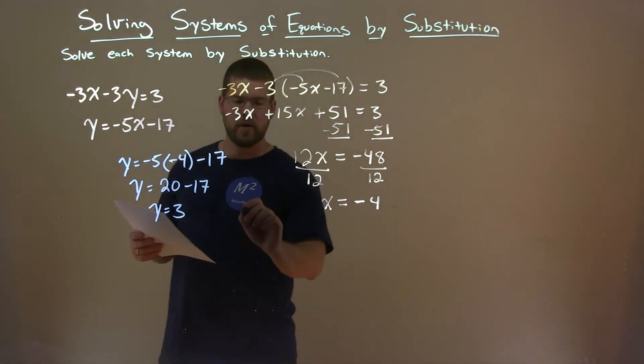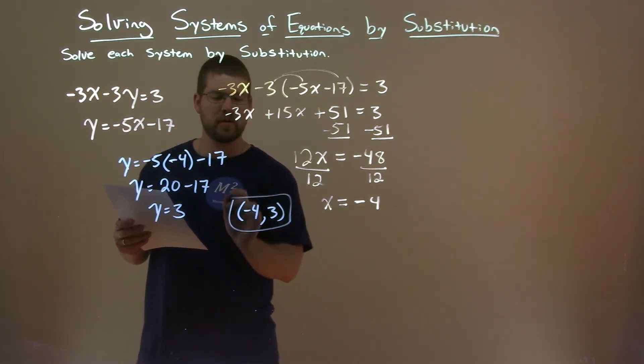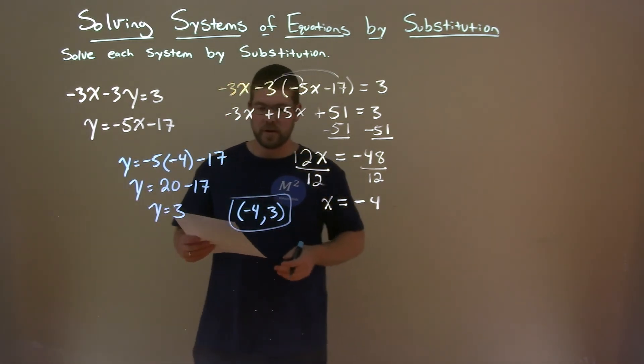So now we have our x and y value. We can write that as a coordinate point, minus 4, comma 3. And there is our final answer: minus 4, comma 3.